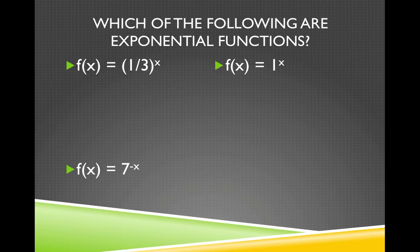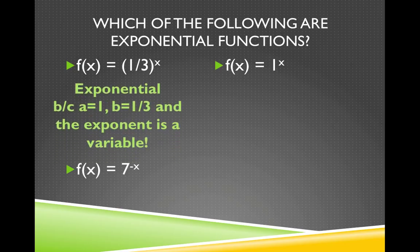f(x) equals one-third to the x power. This one is exponential. Again, because the a is 1, the b, the base is one-third, and the exponent is a variable. One-third is perfectly fine for a base.